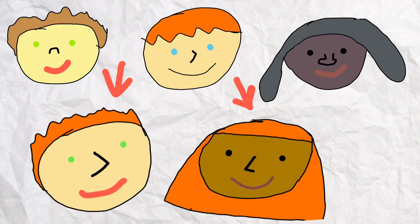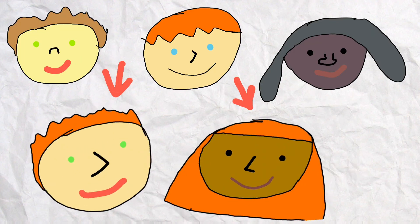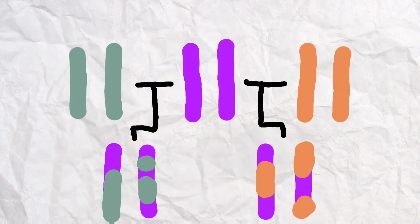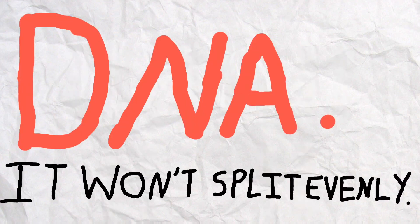which is why half-siblings, or even any kind of siblings, may not look like each other. That's completely down to what chromosomes we get from each parent. As for DNA, whether we look like our family or not, it doesn't split evenly and never will.